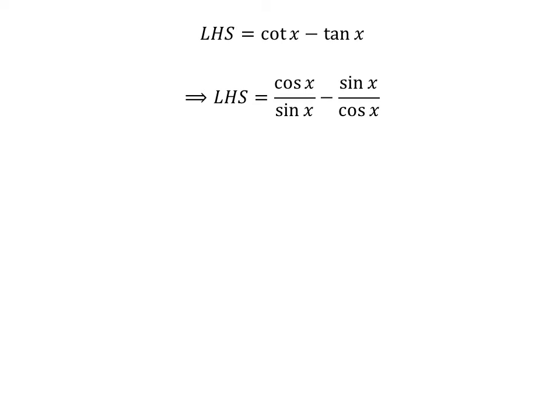We know cotangent of x is equal to cosine of x upon sine of x, and tangent of x is equal to sine of x upon cosine of x. So the left hand side of the identity is equal to cosine of x upon sine of x minus sine of x upon cosine of x. Subtraction of the fractions gives us the left hand side equal to square of cosine of x minus square of sine of x, upon sine of x times cosine of x.